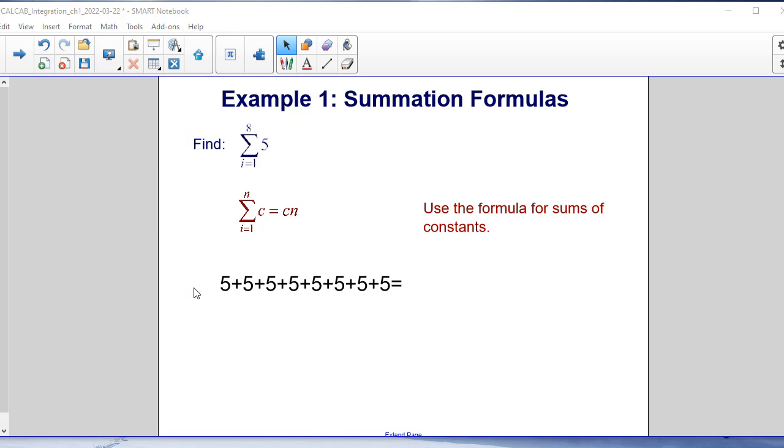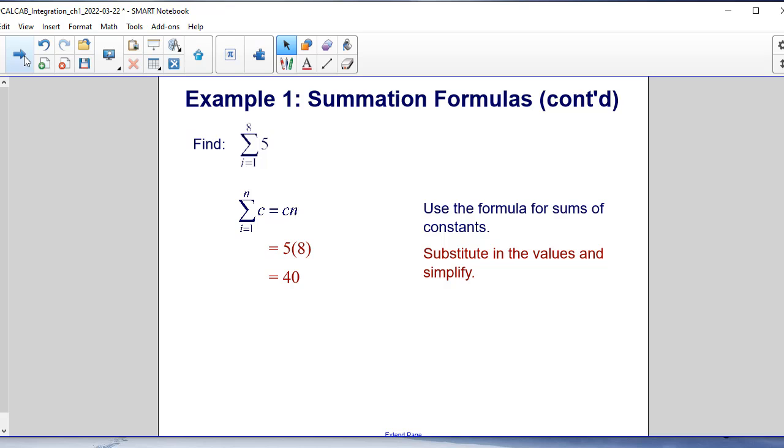So we see that we're going to add 5 eight times. So we add 5 plus 5 plus 5 plus 5 and we continue that 8 times because our upper bound is 8. That's the same thing as saying 5 times 8, which is 40.